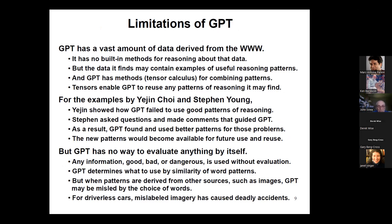GPT has a huge amount of data, but any information it uses is used without evaluation — it has no way to evaluate it and no system for precise formal reasoning. It just determines what's the most probable phrase to continue the pattern of language. It can also be misled by choices of words. As we've heard, drivers of autonomous cars frequently get into problems with mislabeled imagery, causing accidents including deaths.